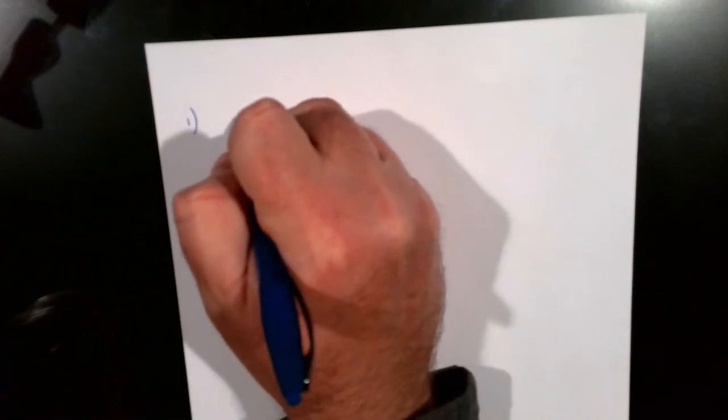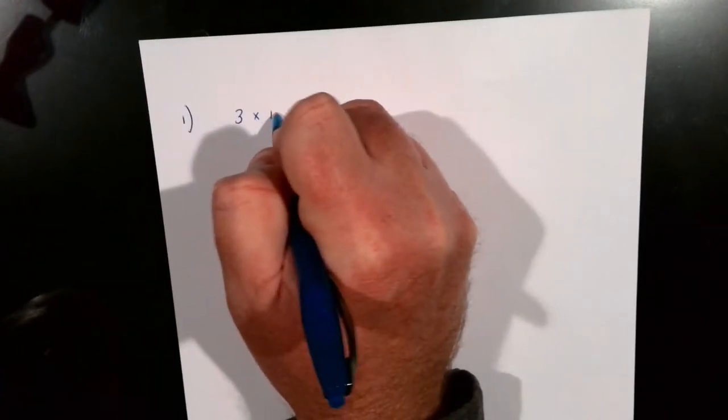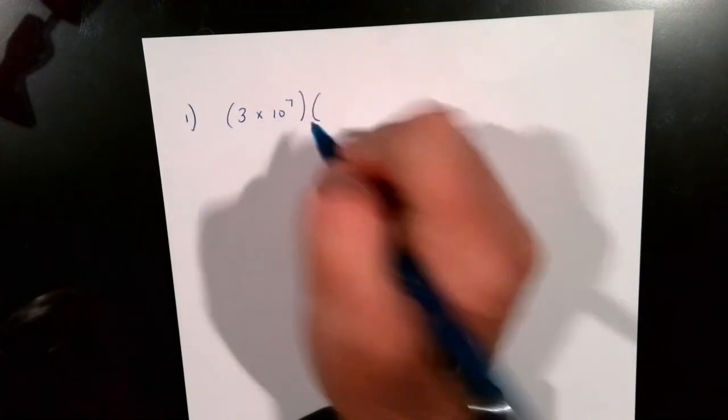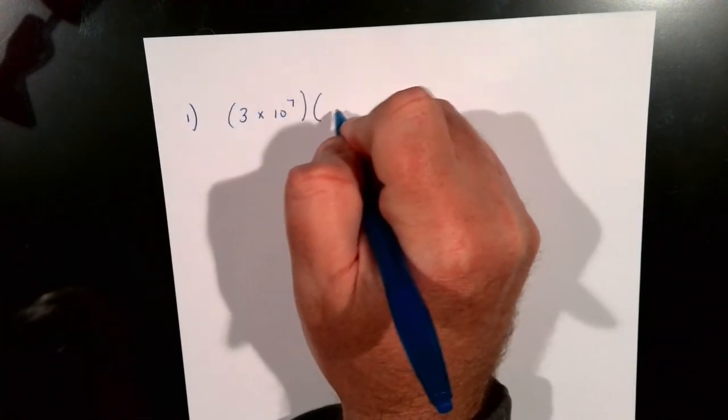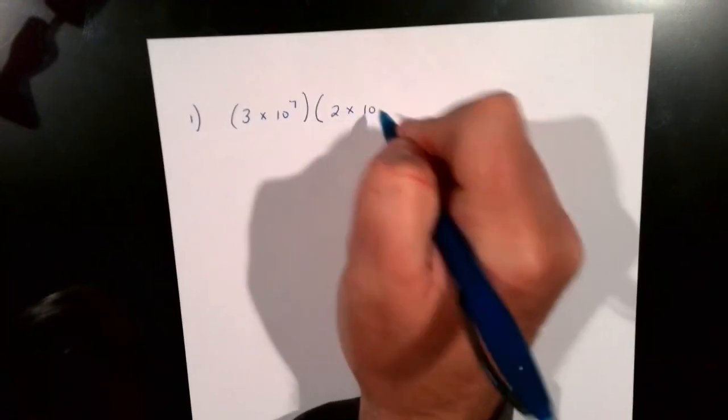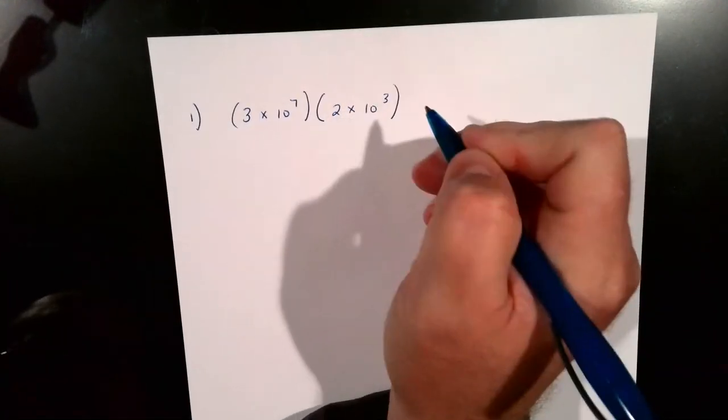Hi everyone. Today we want to go over how to multiply and divide scientific notation. So if you watched the first video, we're going to go from there. So let's say we have 3 times 10 to the 7th power, and we want to times that by 2 times 10 to the 3rd power.